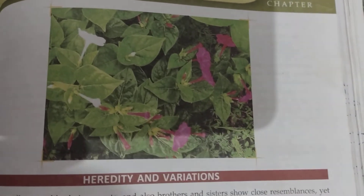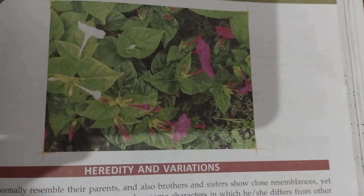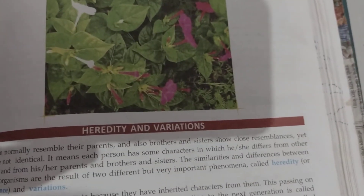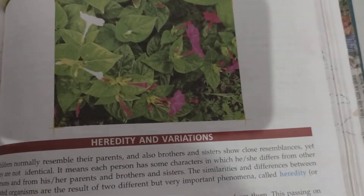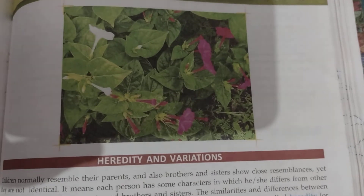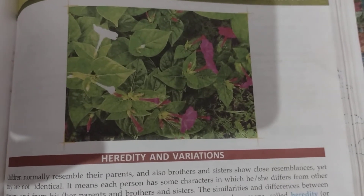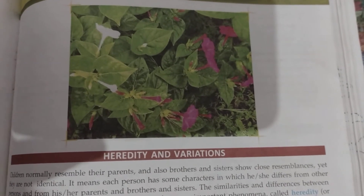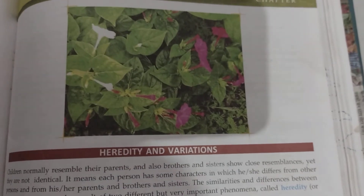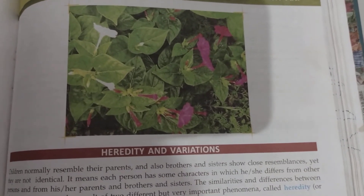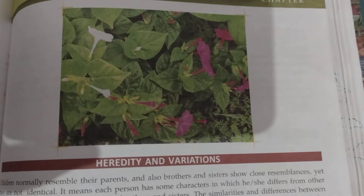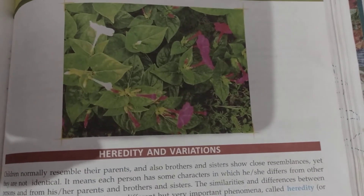During reproduction, whether it is sexual or asexual type, the genes or chromosomes pass from one generation to another generation, or from one cell to another cell. Due to which, the character also passes.